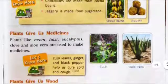Plants also give us gum, paper, and rubber. We get gum from the acacia tree, we get paper from the bamboo tree, and we get rubber from the rubber tree.